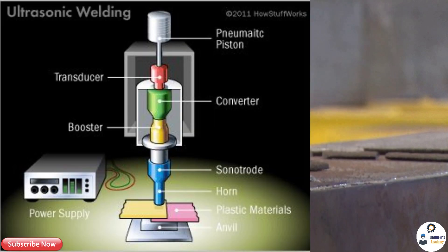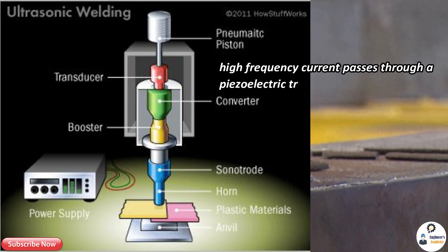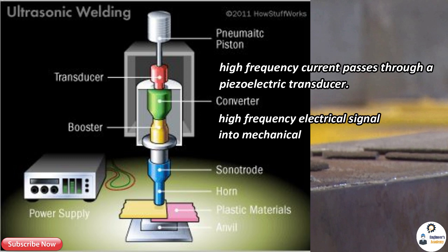Now let's see the working of ultrasonic welding. High frequency current passes through a piezoelectric transducer, which converts the high frequency electrical signal into mechanical vibration. This vibration is further supplied to the booster, which amplifies its frequency. The amplified high frequency vibration then passes through the horn, which is in contact with the welding plate.